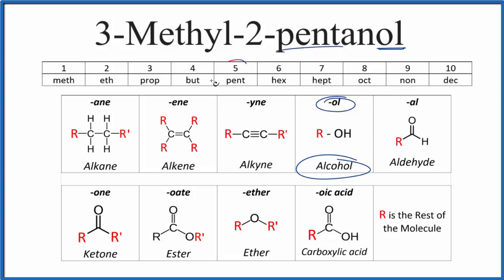Pent means 5, so we're going to have a chain of 5 carbons. One of the carbons is going to be bonded to this OH group here. It's going to be the second carbon. Then on the third carbon, we'll have a methyl group. So let's put 5 carbons up and number them in a chain.